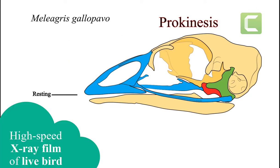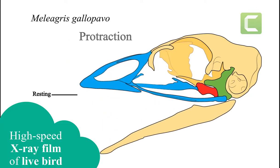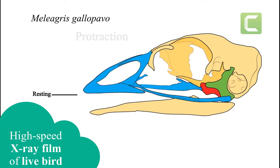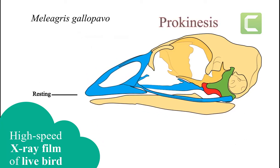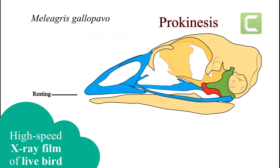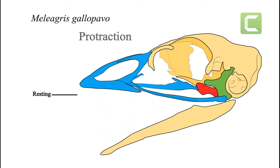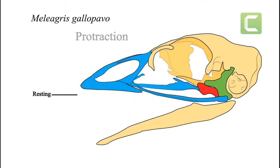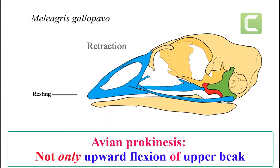Most analyses of kinesis are done with dissected skulls, but this animation is based on x-ray film of a live bird while feeding. The upper beak was found to bend downward as well as upward.